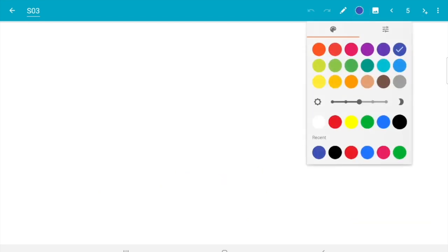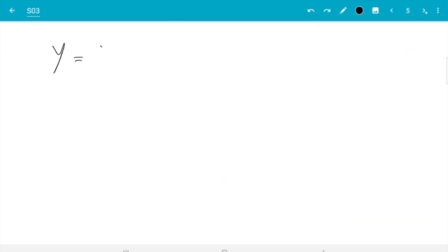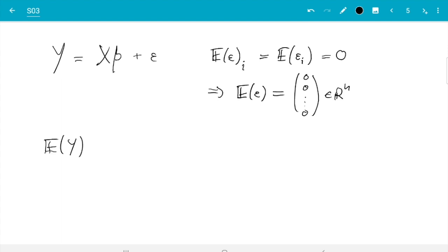So let us just try this out. In our model we have y is x beta plus epsilon. First, expectation of epsilon i's component is the expectation of epsilon i which by assumption was zero. And from that we conclude expectation of epsilon is the zero vector, zero zero zero, that's n zeros.